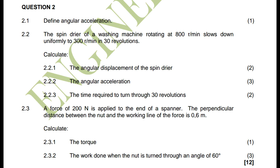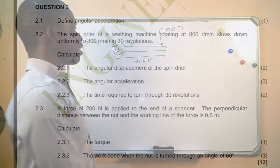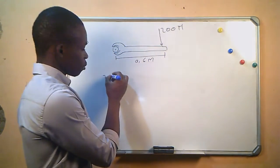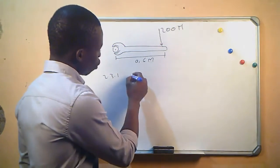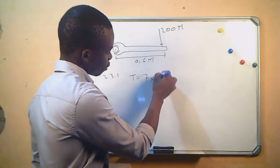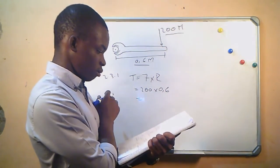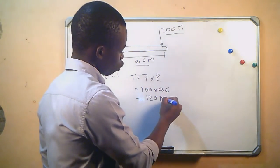Moving to question 2.3: a force of 200 newtons is applied to the end of a spanner. The perpendicular distance between the knot and the working line of the force is 0.6 meters. For question 2.3.1, calculate the torque. Torque equals force times radius: T = 200 × 0.6 = 120 Newton meters.